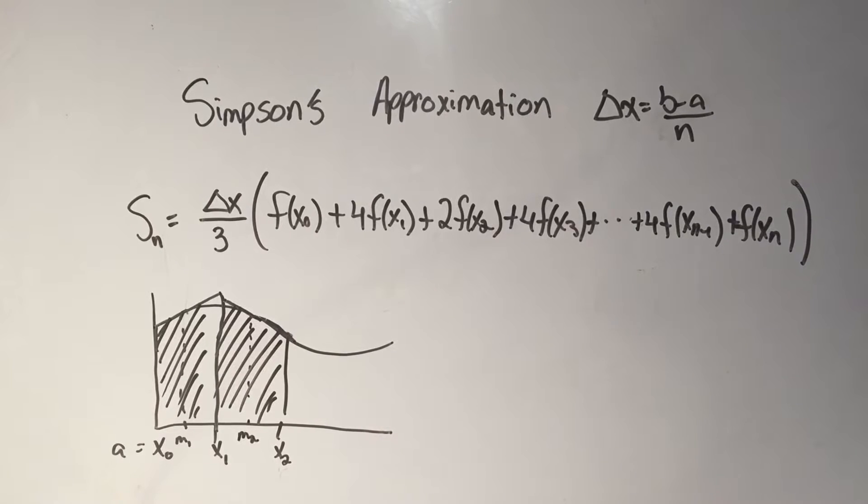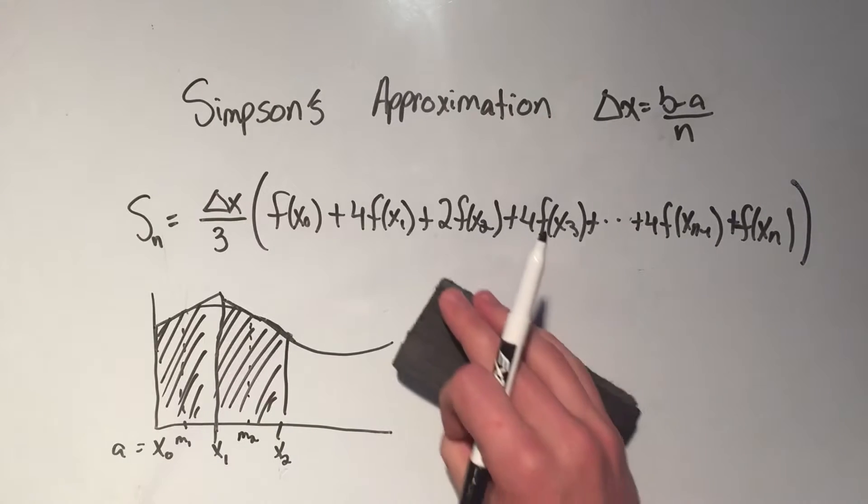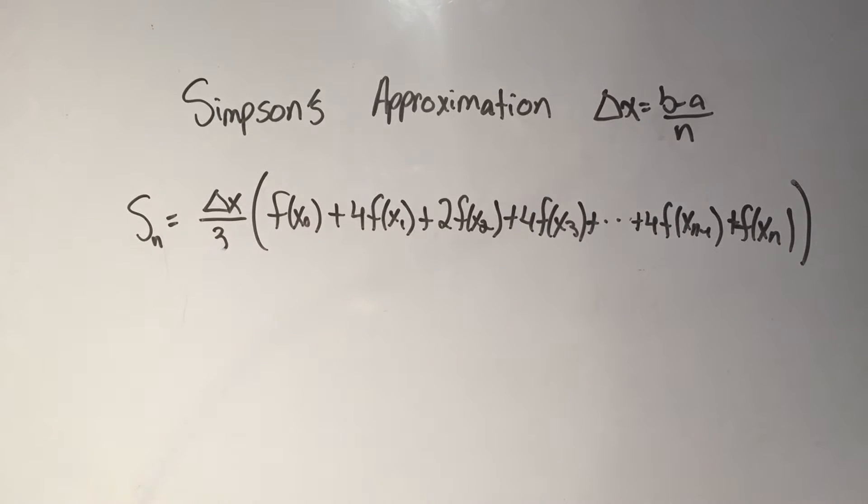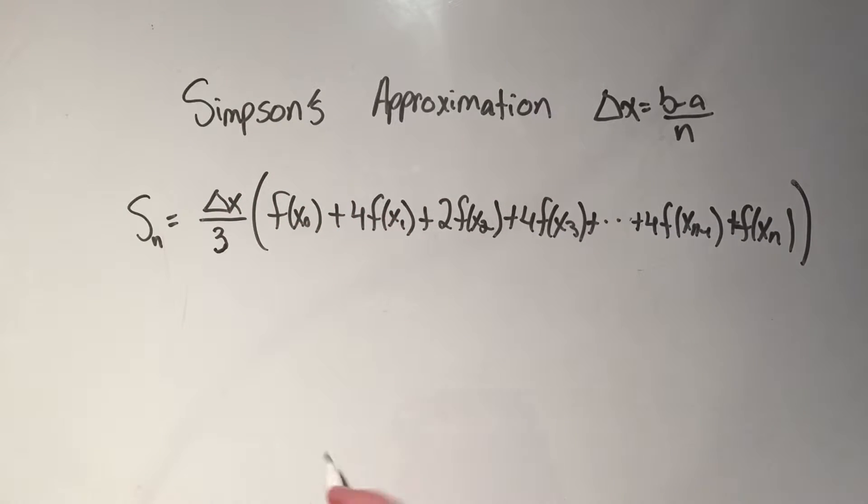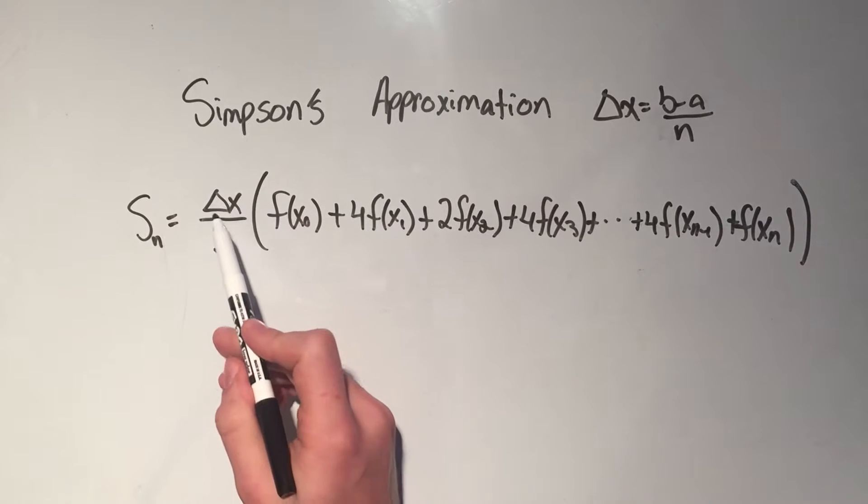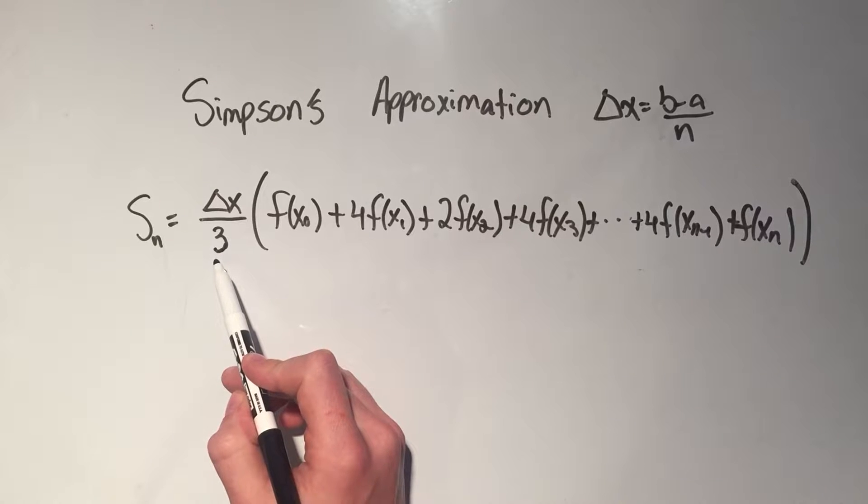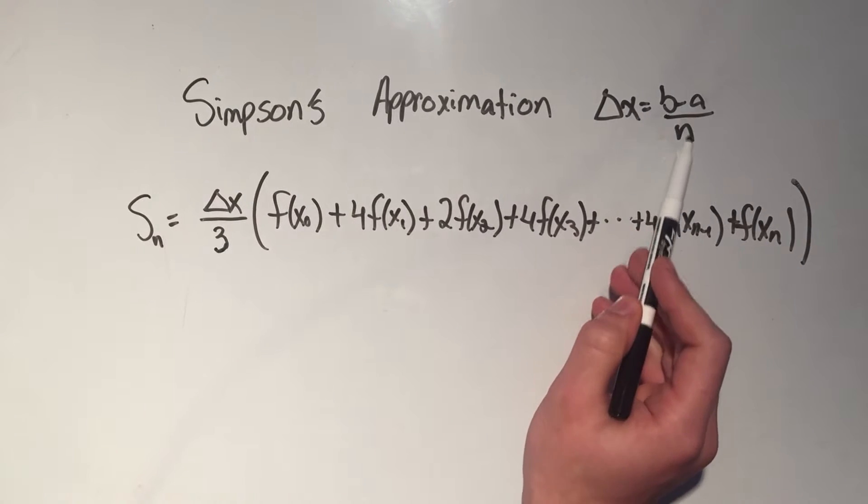So it's not really too important where this is coming from, all you really have to do is memorize this chunk of a formula, and well, here it is, sorry that it's long. It's S sub n, so that's the Simpson's approximation with n rectangles, or n subintervals, and this time it's delta x over 3. Remember that delta x is b minus a over n.